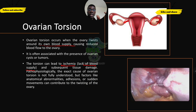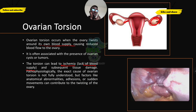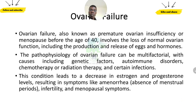Ovarian torsion can be caused by a cyst or tumor in the ovary making it twist or rotate, cutting off blood supply. The treatment is to remove the cause — if addressed in time, the ovary may return to normal. These are very serious medical conditions. If you feel abnormal abdominal pain, seek medical advice as soon as possible.